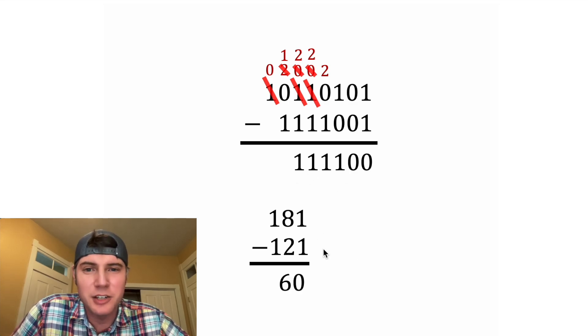And here's the same problem in decimal notation. 181 minus 121 equals 60. How exciting.